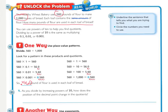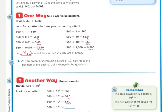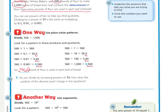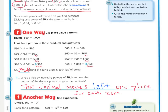Now we're going to write our thoughts about the patterns we've noticed. Looking at number 1: as you divide by increasing powers of 10 — like 10, 100, 1,000, 10,000 — how does the position of the decimal point change in the quotients? The decimal moves left one place for each zero. Right here there are three zeros, so I've moved it left three times.